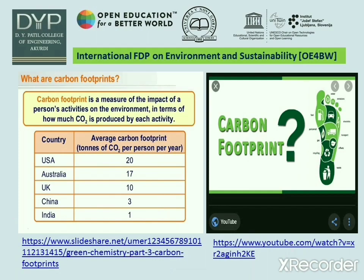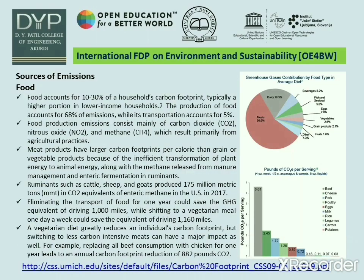Now we will discuss about carbon footprint. Carbon footprint is a measure of the impact of a person's activities on the environment in terms of how much carbon dioxide is produced by each activity. One chart is given here indicating that the average carbon footprint in India is one ton of carbon dioxide per person per year, compared to the USA where it is 20 tons per person per year. A YouTube video link is provided for better understanding.